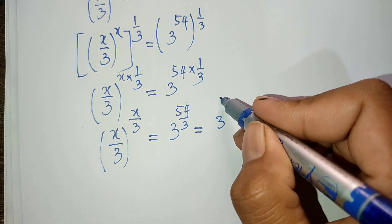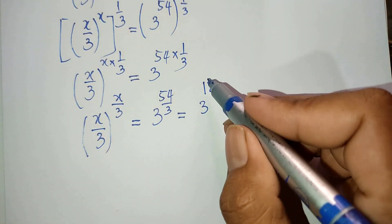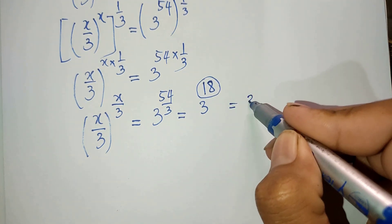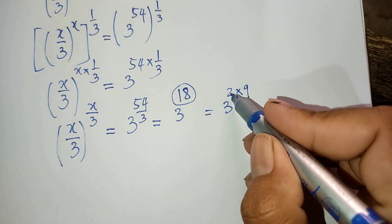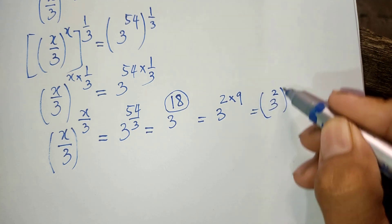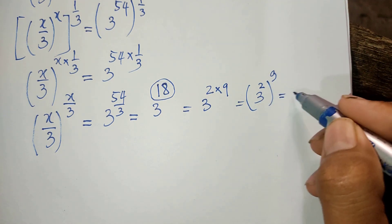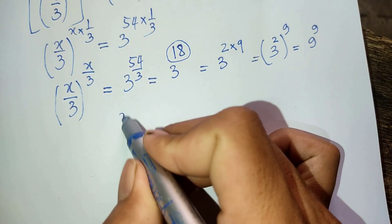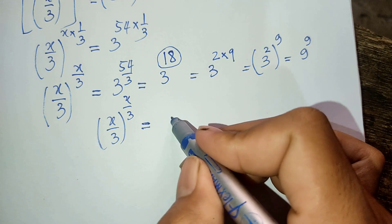Now 18 equals 2 multiplied by 9, so I can write 3 to the power 18 as 3 to the power 2 times 9, which gives 9 to the power 9. So our equation becomes 8 divided by 3, all to the power of 8 divided by 3, equals 9 to the power 9.